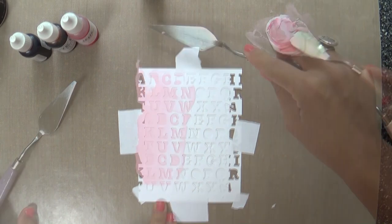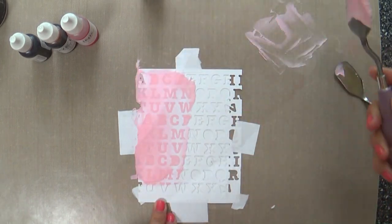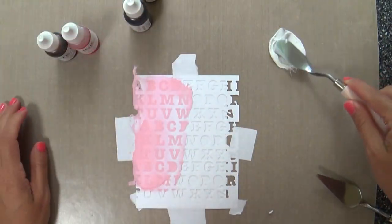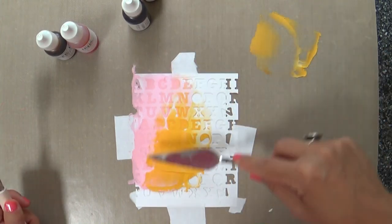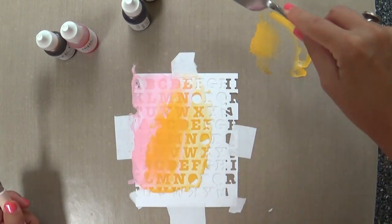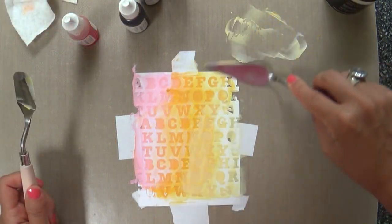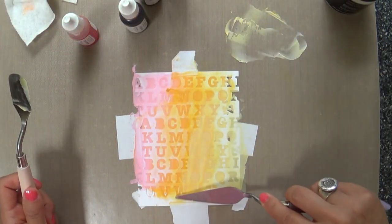I adhered that over top of a card front and this time I went more with the warm colors. I started with Hibiscus Burst and then Orange Zest, Summer Sunrise and then finished off again with Harvest Gold. So you can see the sky's the limit really with this embossing paste.